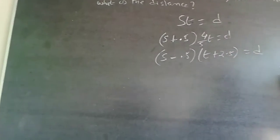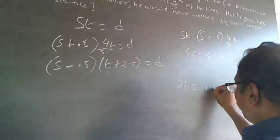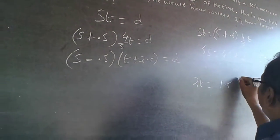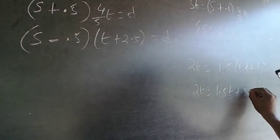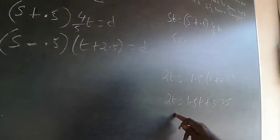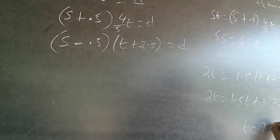So I am substituting S there. 2T will be equal to 1.5, that is 2 minus 0.5, T plus 2.5. So 2T will be equal to 1.5T plus 3.75, or 0.5T will be equal to 3.75, T will be equal to 7.5.